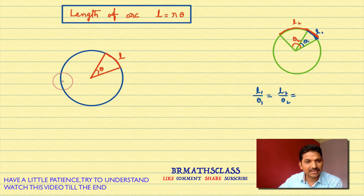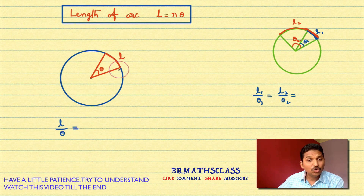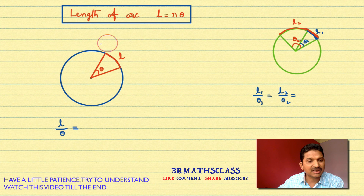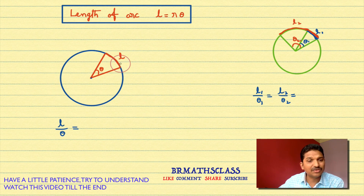Based on that point, come to this diagram — this circle. Here L is the length of this arc and theta is the angle subtended by this arc at the center. We know that L divided by theta equals — observe the full circumference of the circle. That full circumference also subtends an angle at the center. The full length of this arc is the circumference of the circle, which is 2 pi r, where r is the radius of the circle.